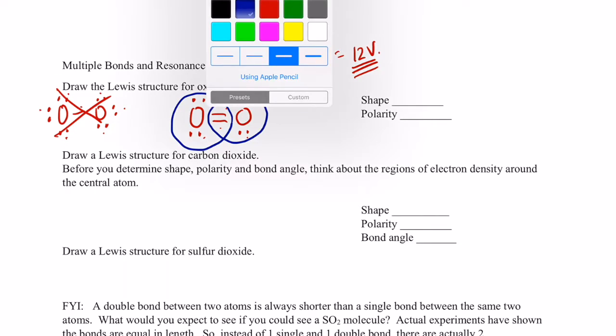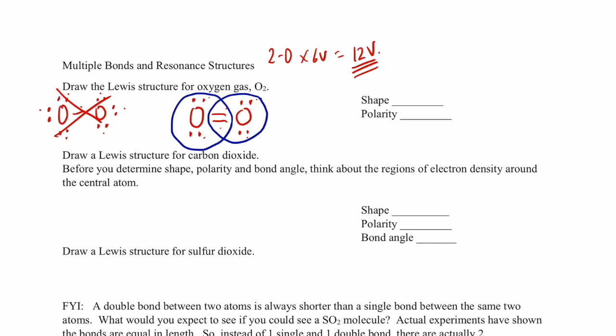Now, the shape and polarity of this is going to be easy. Since there's only two atoms, we know the shape is linear. All molecules with two atoms have a linear shape. And since they both have the same electronegativity values, there will be no dipole. So this guy is non-polar.